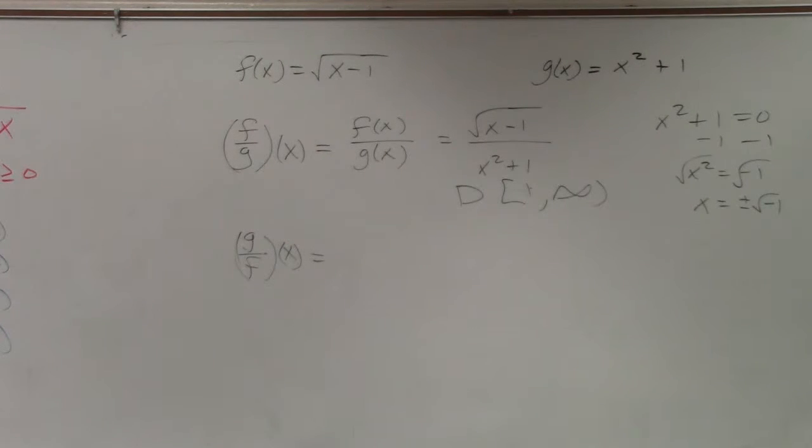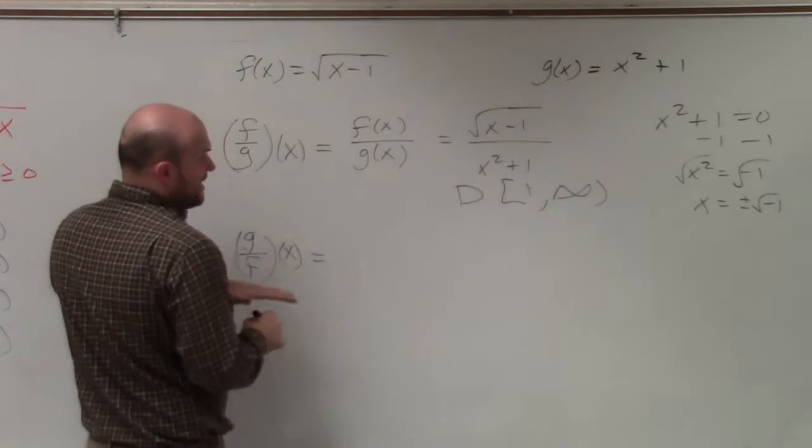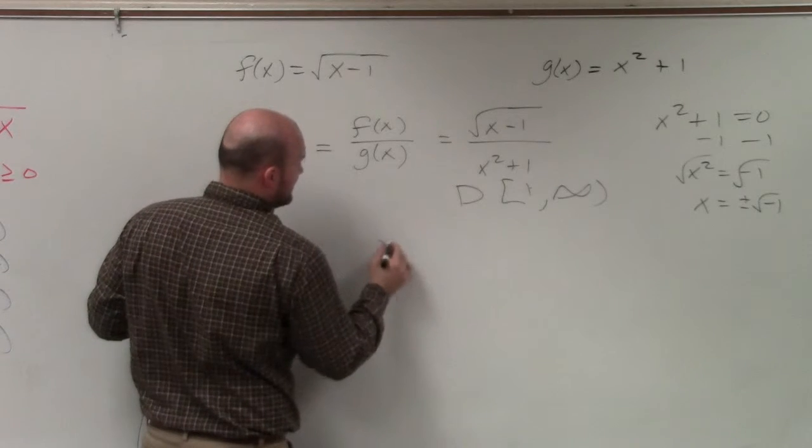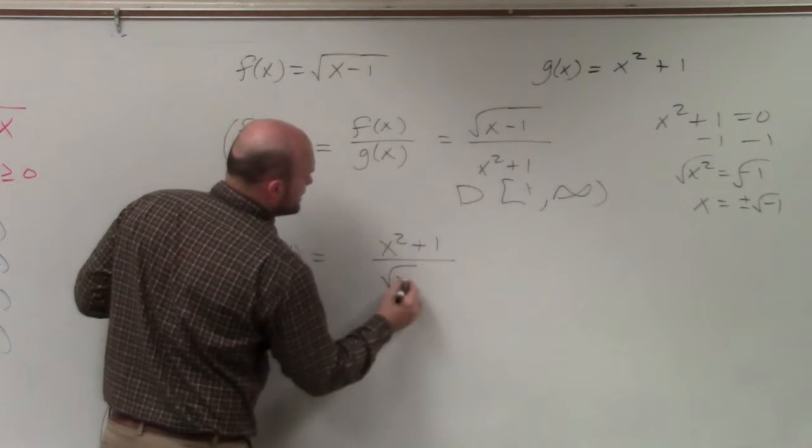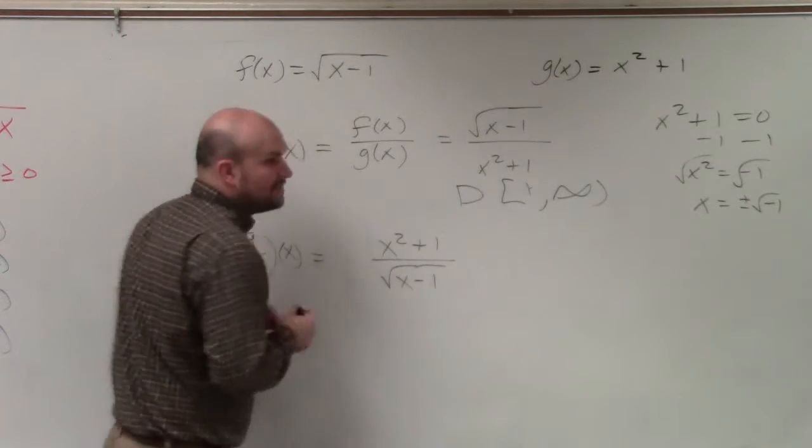Different domain. Guarantee it. So now, g of f of x basically is telling us to take x squared plus 1 and then put x minus 1 in my denominator.